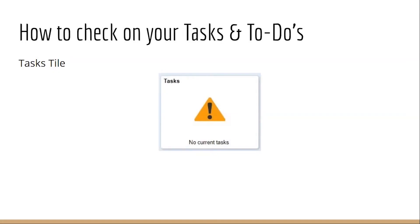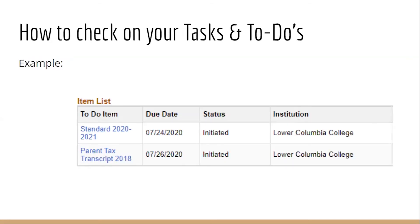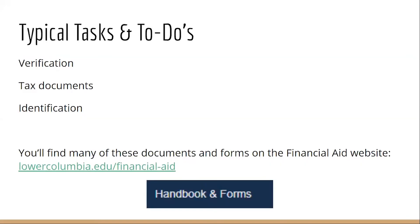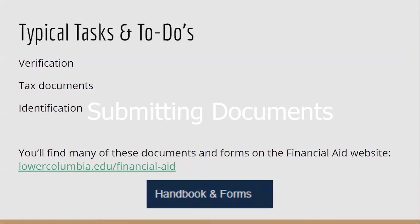If you notice on your tasks tile that there is something due or that you have a to-do item, be sure to check that right away. You'll want to click on each of those to see what is required of you, and get those to the financial aid office as soon as you can. Any supporting documentation that you submit can take three to six weeks to process. Typical to-do items that you might find are verification forms, tax documents, and occasionally identification such as a driver's license or social security card. Many of these forms and documents you'll be able to find on the financial aid website.